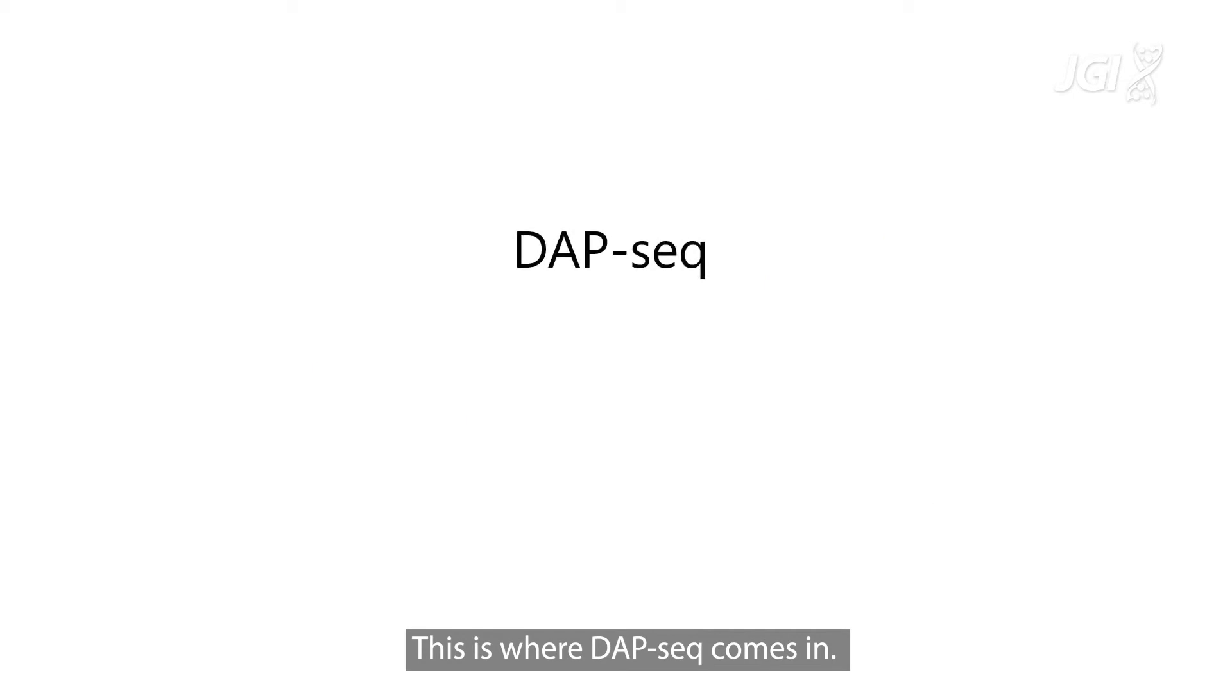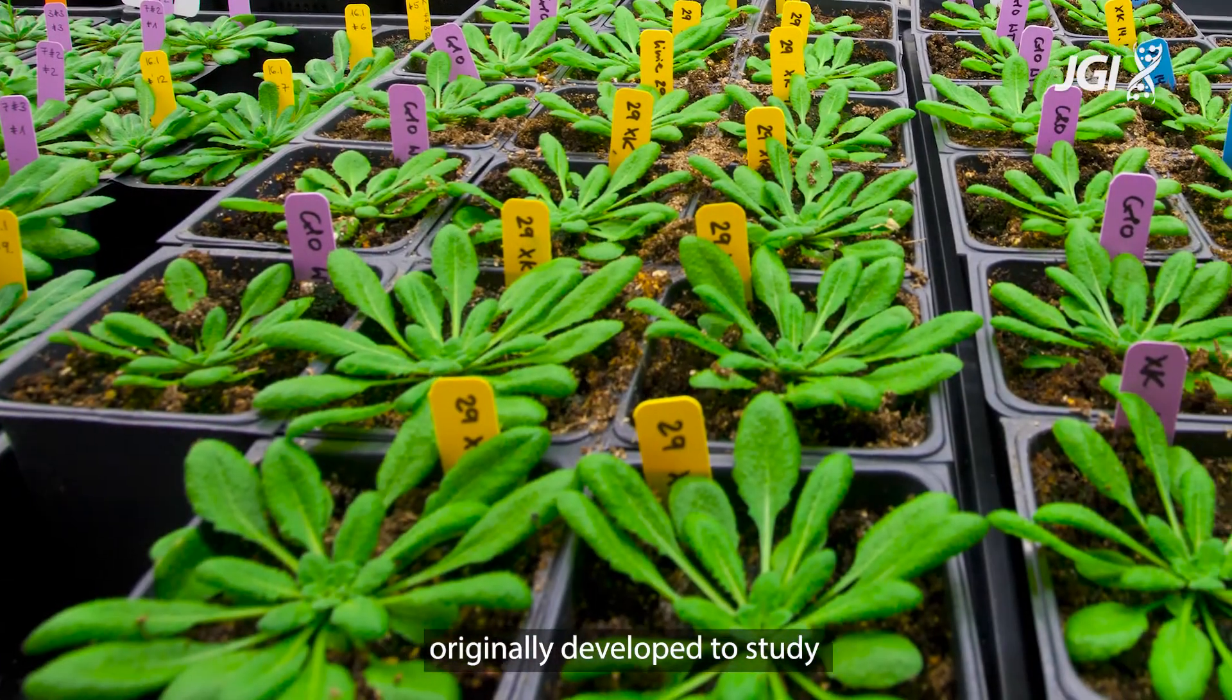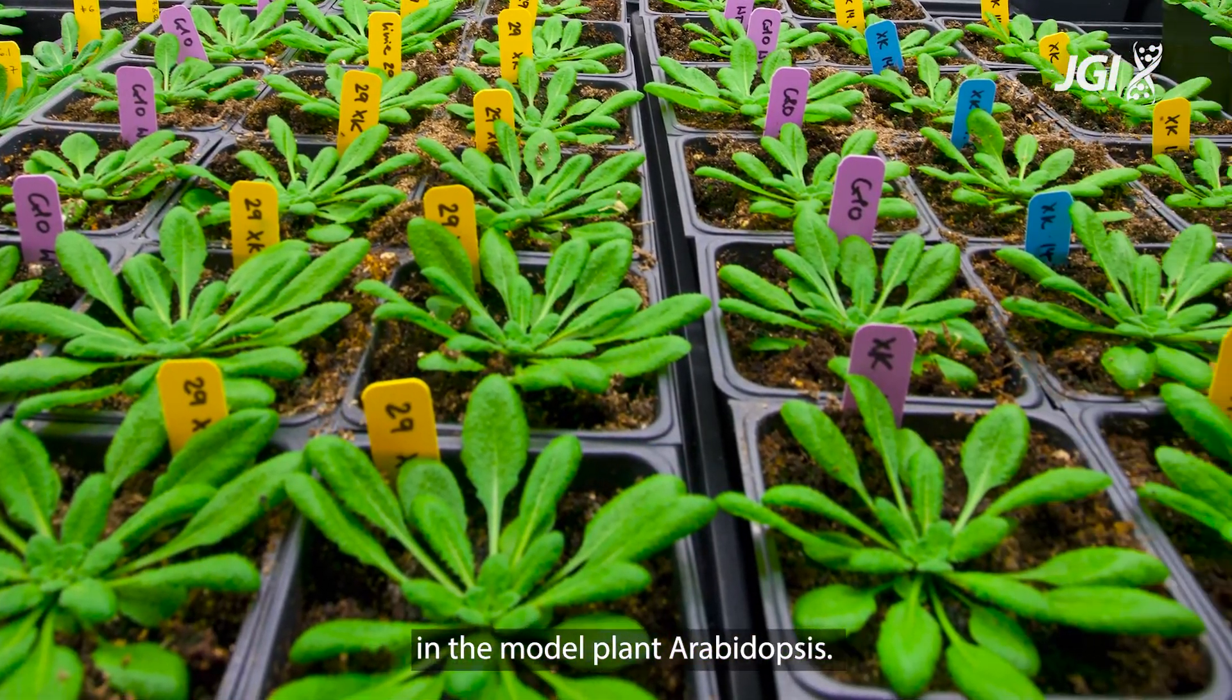This is where DAP-seq comes in. DAP-seq, which stands for DNA Affinity Purification Sequencing, is a method originally developed to study transcription factors in the model plant Arabidopsis.